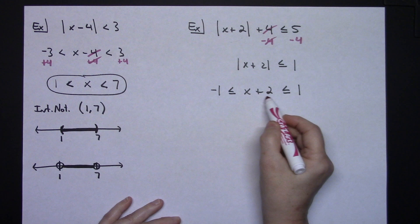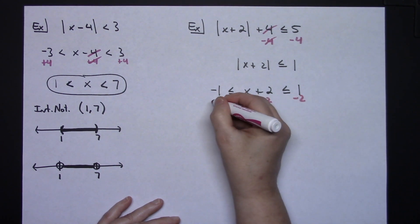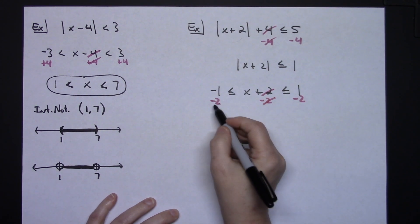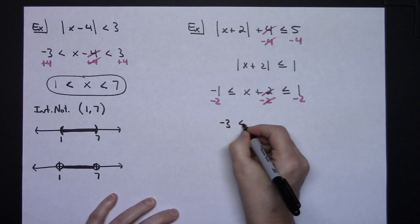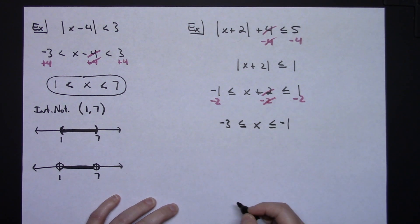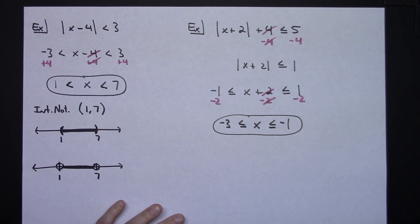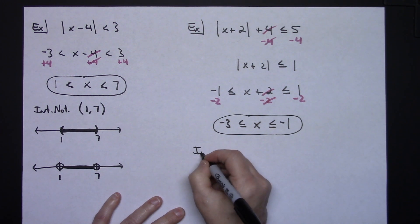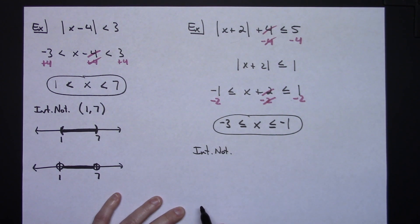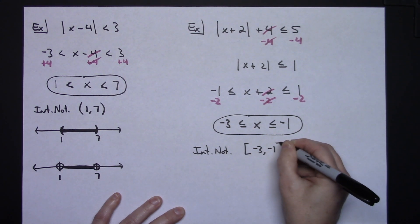I set it up as: negative 1 ≤ x + 2 ≤ 1. To solve for x, I subtract 2 from all three parts. The twos in the middle cancel, giving: negative 3 ≤ x ≤ negative 1. That is my compound inequality answer for this absolute value problem.